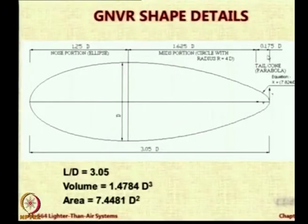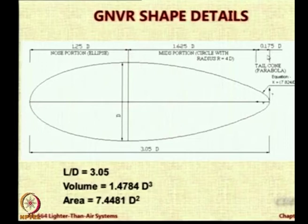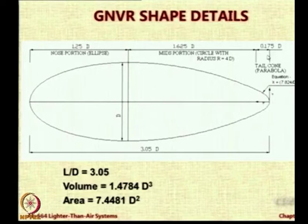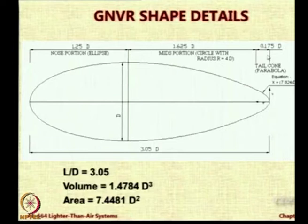Why a parabola? Because the scientists who make aerostat envelopes told him that a parabolic shape is good for attaching fins. They said if the tail cone is parabolic it kind of remains rigid and they are able to mount fins easily. So he gave the last portion as parabolic and provided an equation for that. In between the ellipse at the front and the parabolic tail, he fitted an arc of a circle. So: 1.25 times D from nose is an ellipsoid shape; the mid portion is a circle with radius R equal to 4 times diameter; and the rear tail cone parabola is 1.5 times diameter in length. These numbers like 1.625 come from the intersection of these geometric constructs.